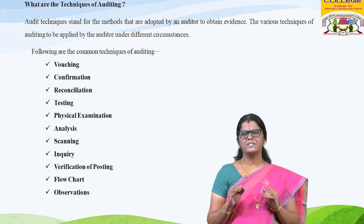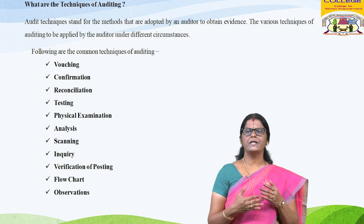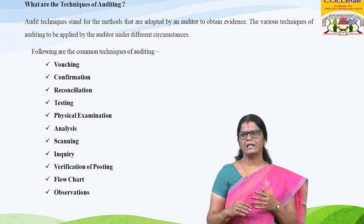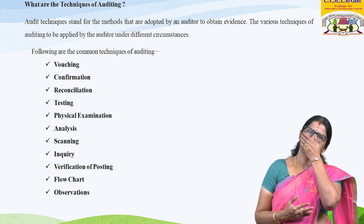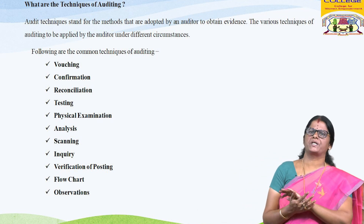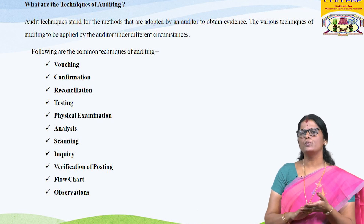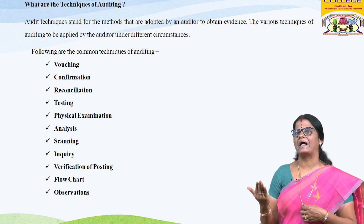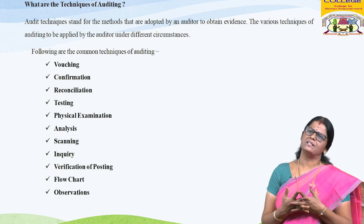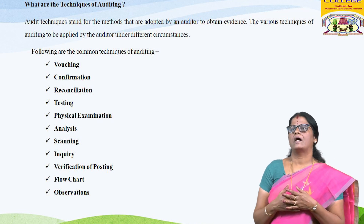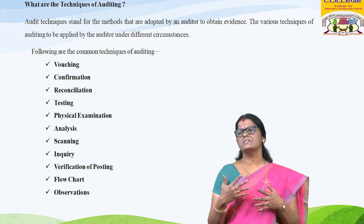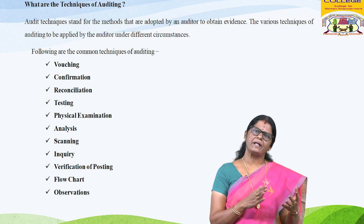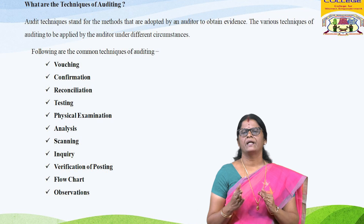Confirmation: this technique is used by an auditor to validate the correctness of a transaction. For example, an auditor obtains a return statement directly from debtors to confirm the debtors' balance as it appears in the books of the client. Reconciliation: this technique is used to determine the reason for differences in balances. For example, to know the difference between the bank book of the client and the bank balance in the bank statement or passbook, the auditor prepares a reconciliation statement. The same method may be used for debtors, creditors, etc.